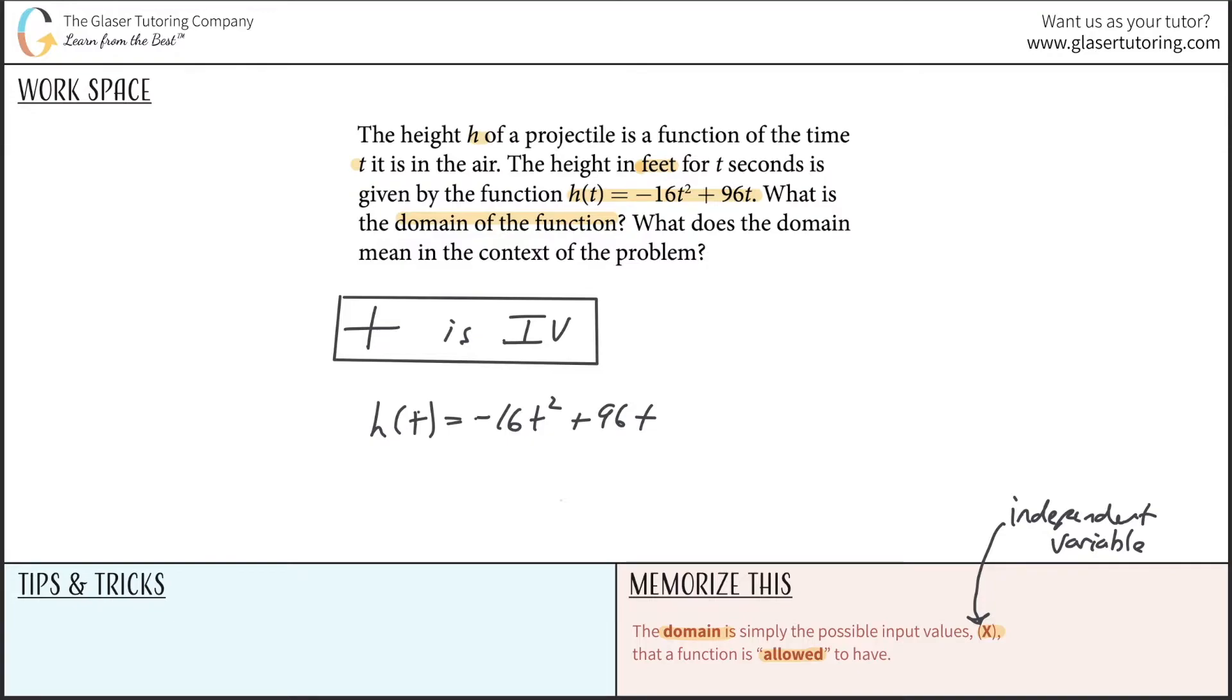For this problem, you have to consider the physics of what's happening, the idea that we have a certain projectile. Pretend that you're over here and you're going to throw a ball. Let's say it starts off at height zero. If you throw the ball, it's going to make an arc that kind of looks like this, and it's going to come back down eventually.